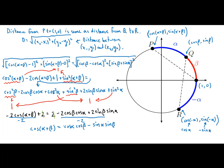This actually comes from somewhere — it's not just falling out of the sky. The important part to remember is: for sine of alpha plus beta, think sine, cosine, cosine, sine. And for cosine of alpha plus beta, think cosine, cosine, sine, sine with a minus in the middle.